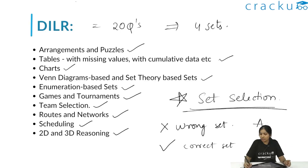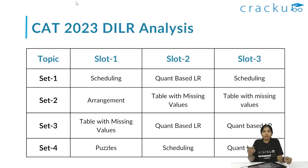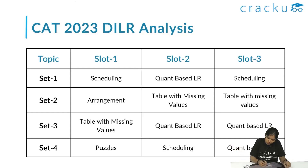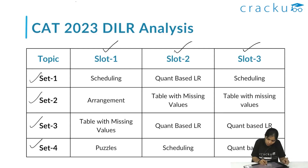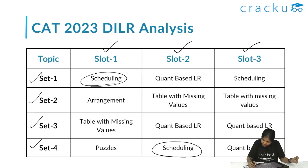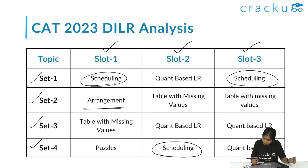Maintaining accuracy is also very important. Looking at the CAT 2023 DILR section-wise weightage — across slot 1, 2, and 3, four sets were provided each time. In slot 1 set 1, they asked about scheduling. In slot 2 set 4 and slot 3 set 1 were also on scheduling. Set 2 in slot 3 covered arrangement questions. Tables with missing values appeared in slot 1 set 2 and similar sets in slot 2 and 3. Slot 1 also tested on puzzles.